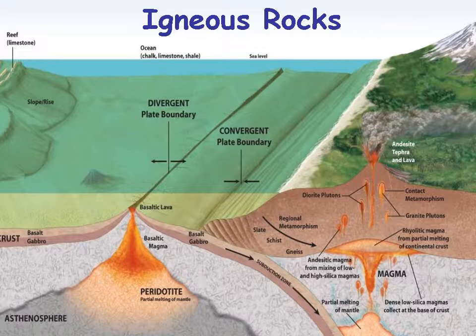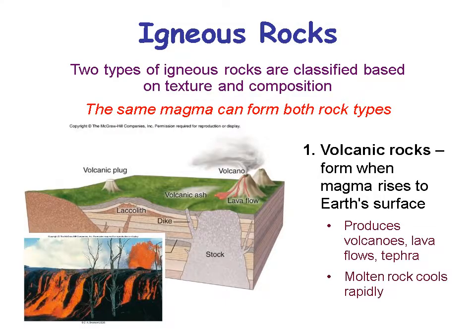Then, like we talked about in plate tectonics, you get andesitic magma coming up from volcanoes on convergent boundaries where you have melting. There are two main types of igneous rocks classified on texture and composition. There's going to be an exercise where you'll be classifying igneous rocks on texture and composition.